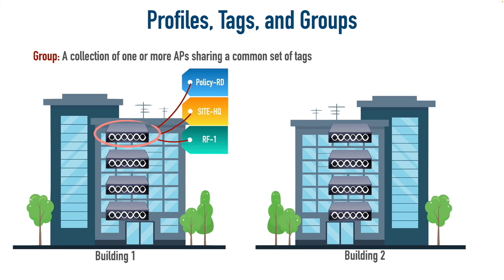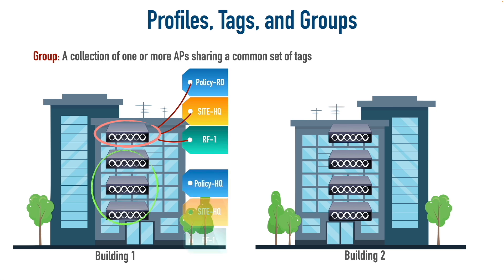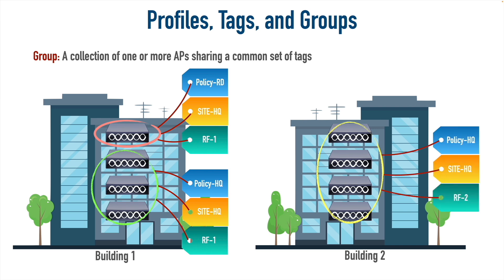We might give building one access points an RF tag of RF1, since those APs do not support the 2.4 GHz band. The remaining APs in building one can be grouped together with the general policy for all HQ access points — excluding the R&D AP — sharing the site HQ tag and also assigned RF1. Then we can group all the APs in building two together: they get the policy HQ tag, share the site HQ tag, but since they support the 2.4 GHz band, they get a different RF tag — RF2 — which includes the 2.4 GHz band.